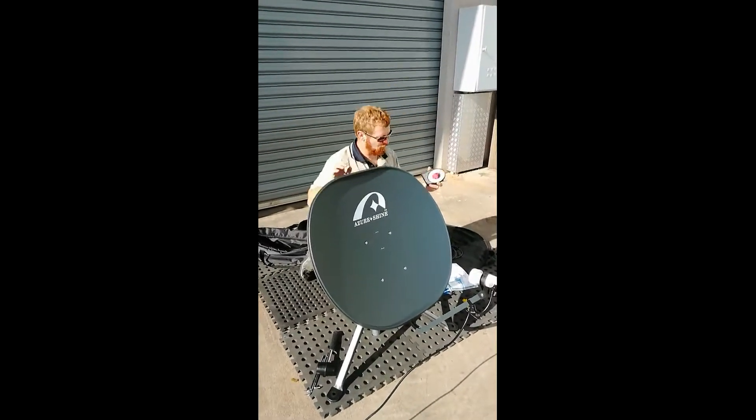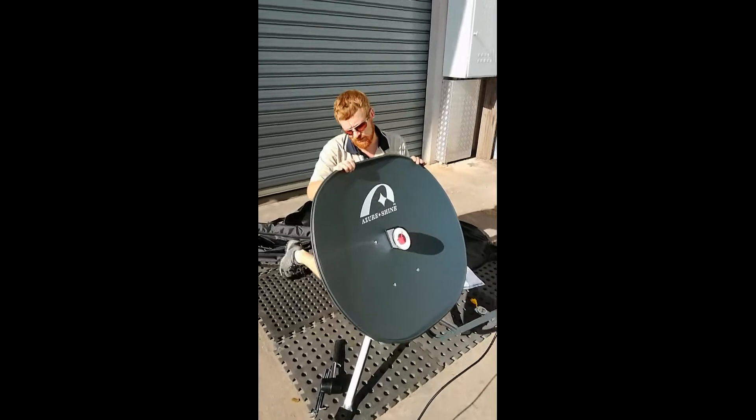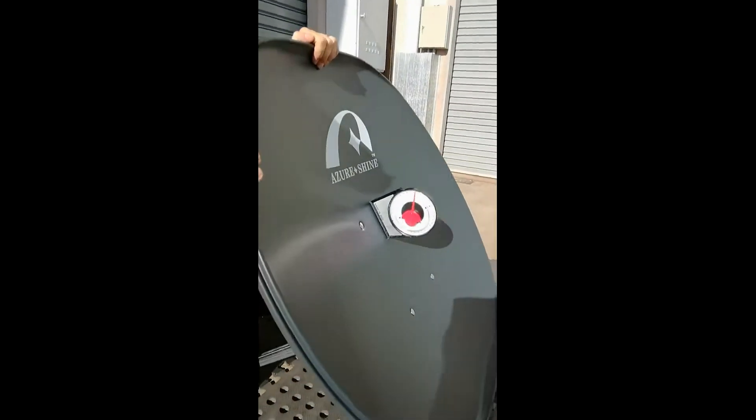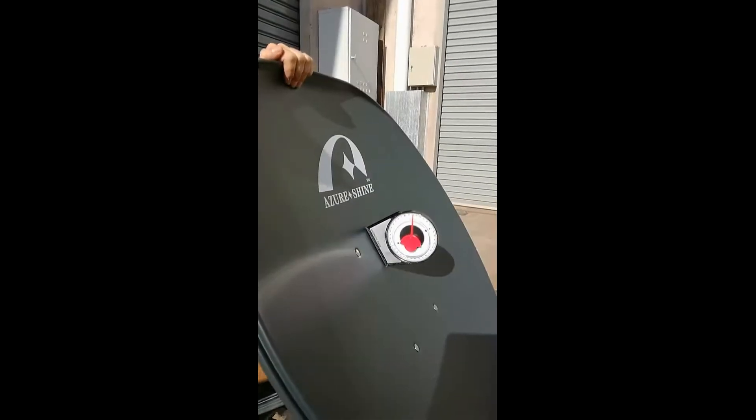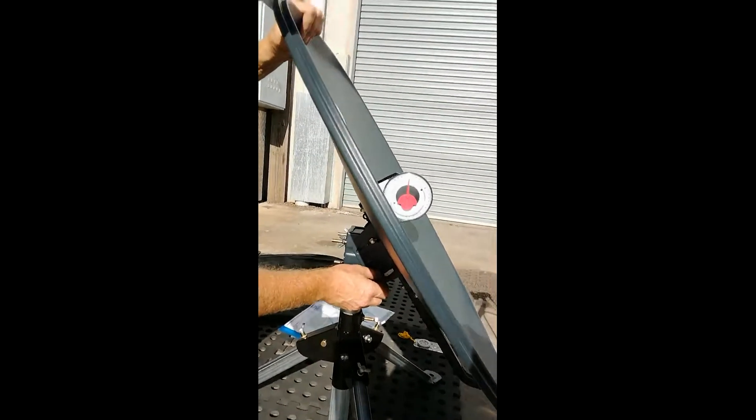We'll then set up our elevation, putting it on the marks here. And where we're located we need it at 58 degrees. So you'll loosen off the wing nuts on the side and put it at about 58.